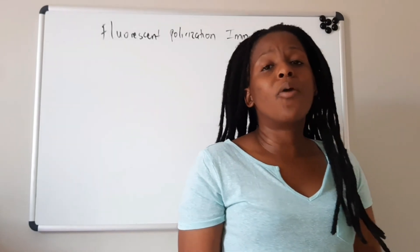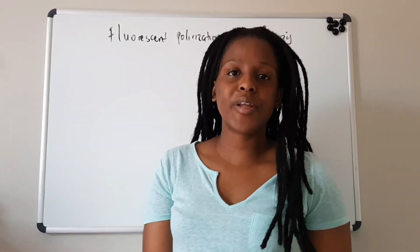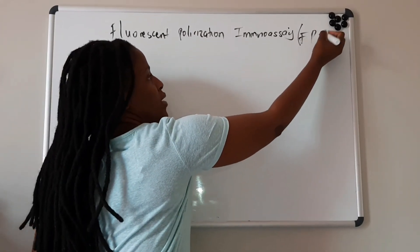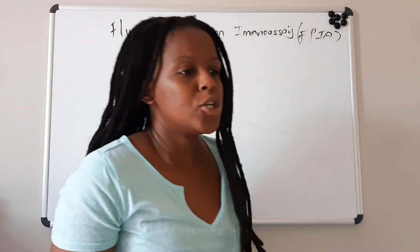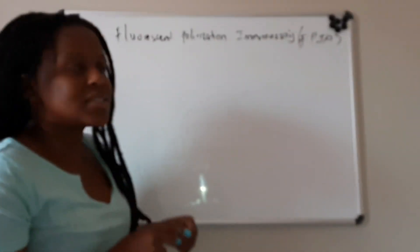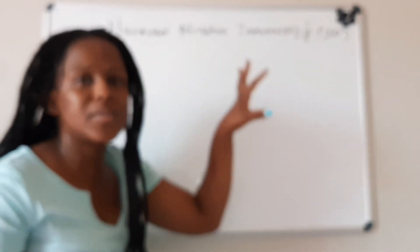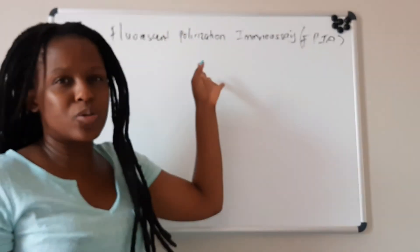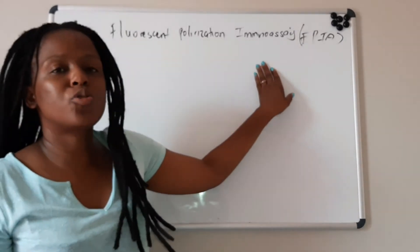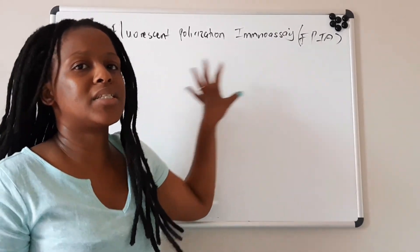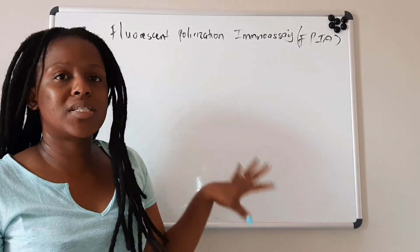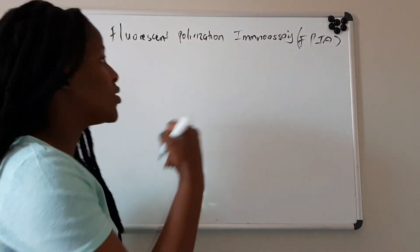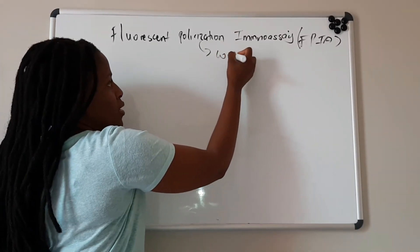In this video, I want us to talk about fluorescent polarization immunoassay, or FPIA in abbreviation. It means we are going to talk about an antibody or an antigen that will be tagged with a fluorescent molecule, and the light that is going to be used will be polarized light. It is also an immunoassay, so there are antigen and antibody reactions taking place. A fluorescent polarization immunoassay is a competitive immunoassay.